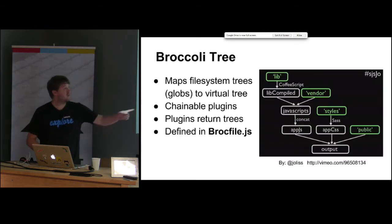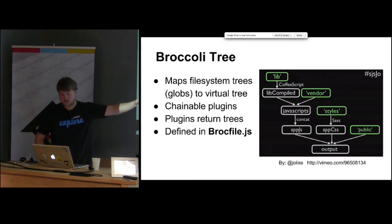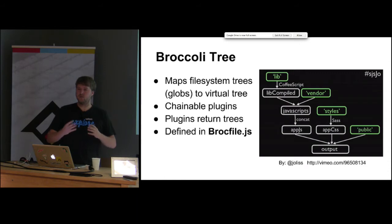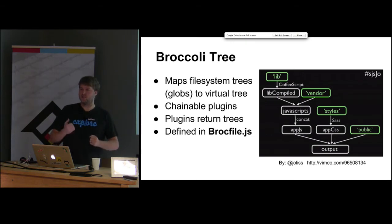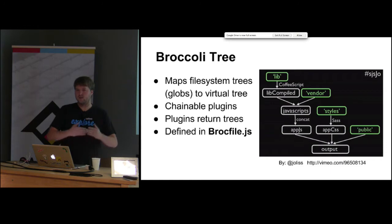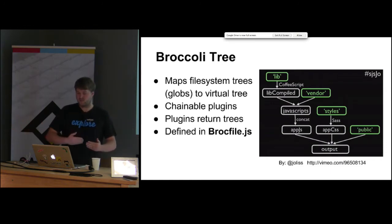A Broccoli tree is basically responsible for mapping things on your file system to virtual trees that you can use as part of chainable plugins. It doesn't deal with files individually — it deals with globs. The motto is 'trees, not files.' You're not individually specifying files; you're specifying globs and patterns, whether it's all the JavaScript files in this directory or all the styles in this directory.